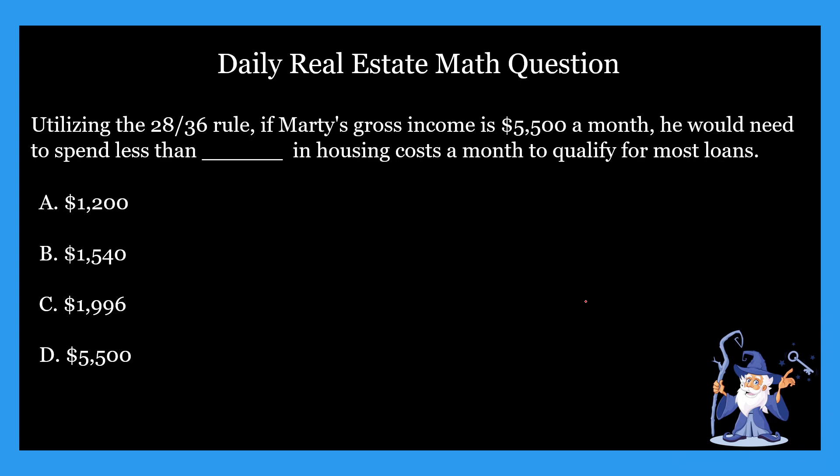Today we're starting off with 28 by 36 rule questions. These are pretty straightforward, and hopefully by the end of these videos you'll get the hang of it. So let's take a look at this one. Utilizing the 28 by 36 rule, if Marty's gross income is $5,500 a month, he would need to spend less than blank in housing costs a month to qualify for most loans. The four options are: A, $1,200; B, $1,540; C, $1,996; or D, $5,500. Go ahead and pause here, do the math problem yourself, and come up with your answer.